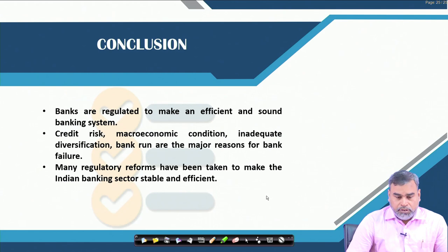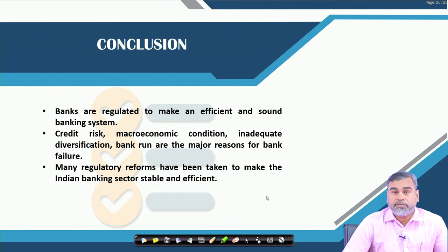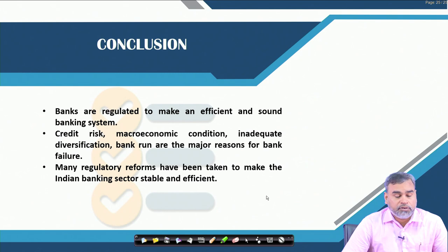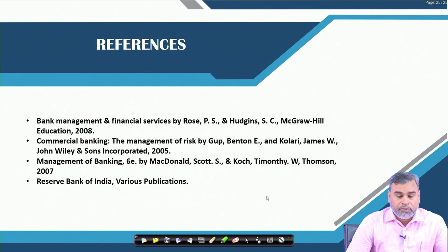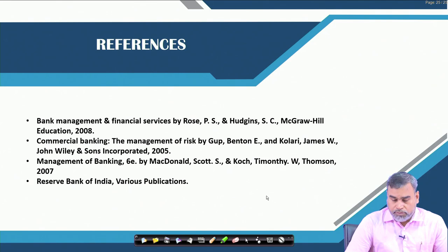To conclude, these are the three things discussed in this session: banks are regulated to make an efficient and sound banking system; credit risk, macroeconomic conditions, inadequate diversification, and bank runs are the major factors for bank failure; and many regulatory reforms over the period have been taken to make the Indian banking sector stable and efficient. These references can be consulted for a better understanding of the regulations of commercial banks in India.